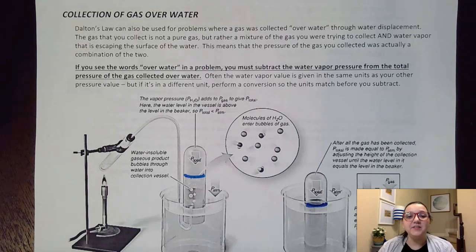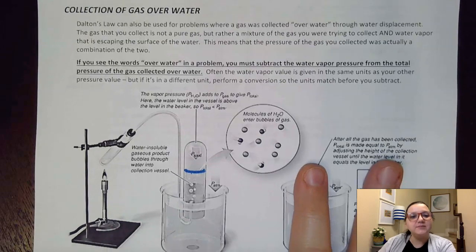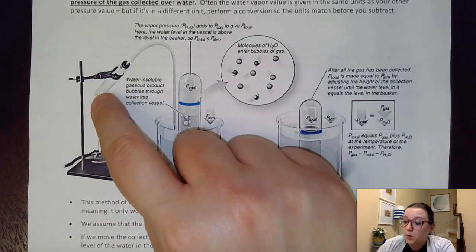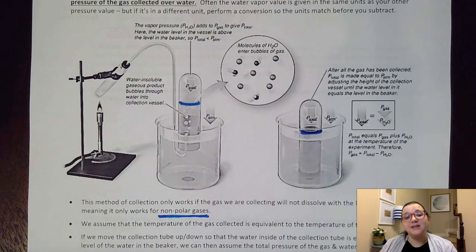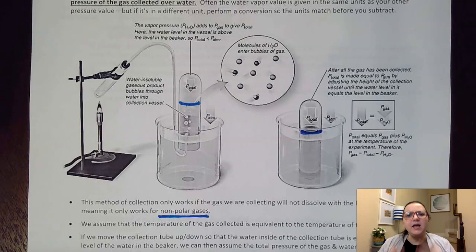Hey guys, Ms. Maricic here, and in this video we're going to be talking about the collection of gas over water, which is a lab application of Dalton's Law. The way that it works is that we would have some sort of an experiment where we would be producing gas from a reaction, and we would want to collect that gas in order to make some measurements about it so we could figure out exactly how much gas is being produced by that reaction.